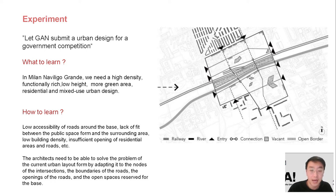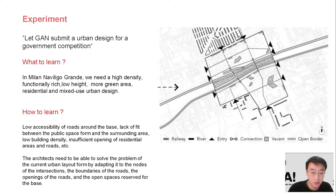What do we need? A high density, high functional diversity, low heat, and more green area to make good urban design. And how to learn? We need to re-modify morphological features such as site, entries, boundaries, open space, and so on to reshape the original urban design. We need to train the GAN network to work with these features to achieve a reasonable layout.